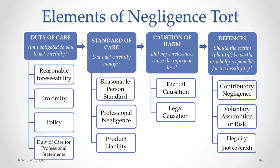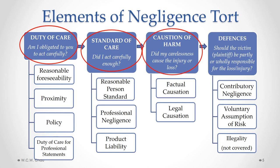In this module, we'll look at all the different elements of a negligence tort. The first element is called duty of care — the question being: am I obligated to act carefully towards you? If the answer is yes, there is a duty to act carefully. The next element is standard of care: did I act carefully enough, or how careful do I need to be? If there is a breach of standard of care — meaning the person did not act carefully enough, in other words they were negligent — the next element we look at is causation of harm: did my carelessness cause the injury or loss?